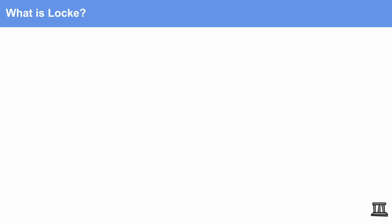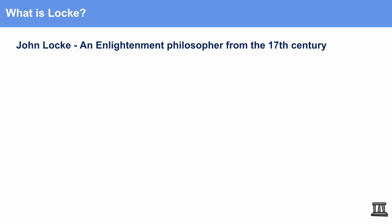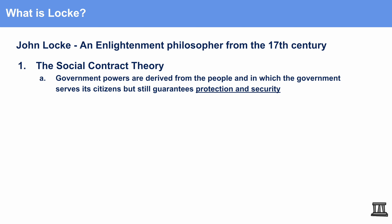The first philosophical theory we're going to dive into is Locke. John Locke was an Enlightenment philosopher from the 17th century. His ideas formed into two different things. The first is the social contract theory, which states that government powers are derived from the people, and the government serves its citizens while guaranteeing basic protection, security, and other rights. Essentially, all of his ideas come down to how people are inherently good and how a higher authority should help protect those inherently good rights.